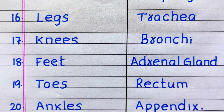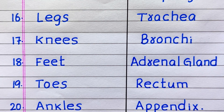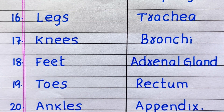The nineteenth name of an external organ is toes. Twentieth, ankles. The nineteenth name of an internal organ is rectum. Last one, twentieth, it is appendix.